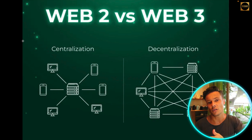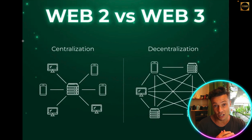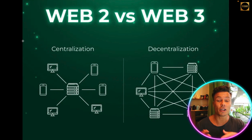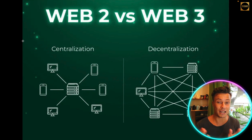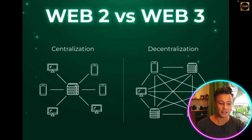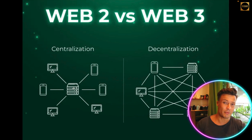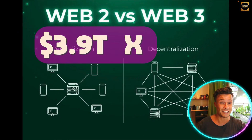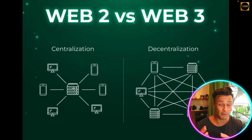Web 2 was when you got upgraded and were allowed to do things using services like Google, where you could search online, go to Amazon, shop online, and do various other things. You could then create your own websites through centralized servers such as Amazon Web Services, Google Cloud, and much more. Notice how that's all centralized — everything is going towards these central systems, which gives those companies a monopoly and they are paid around 3.9 trillion dollars every single year.